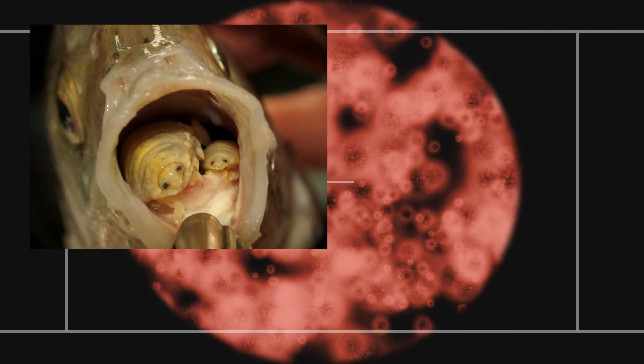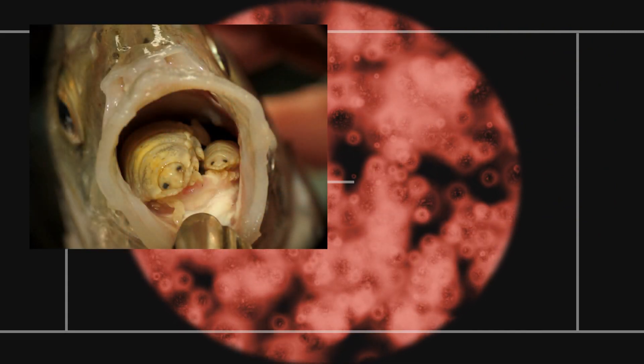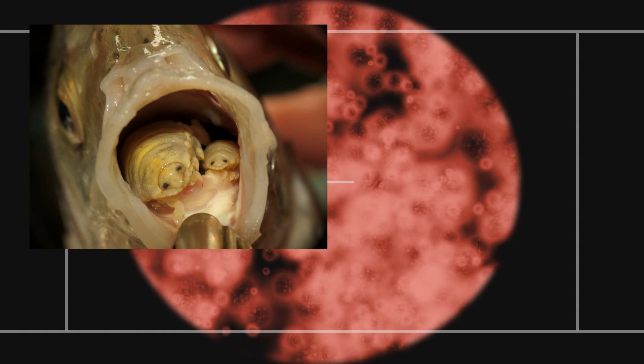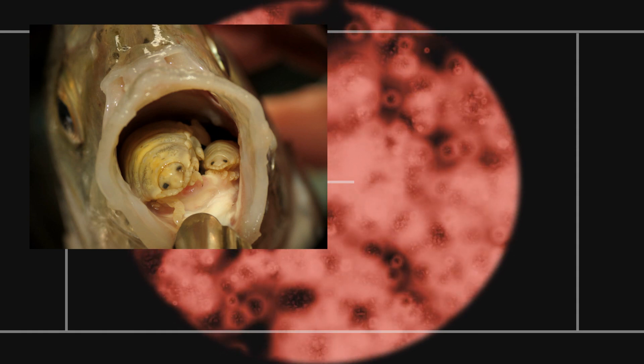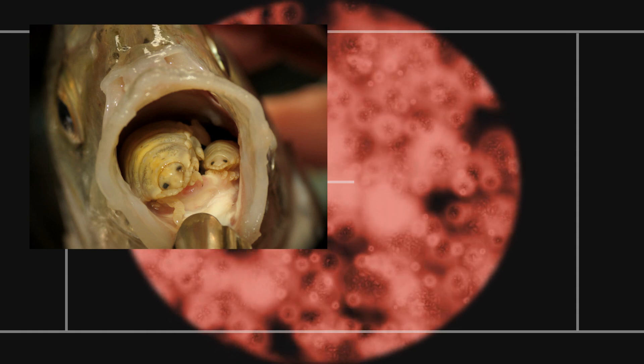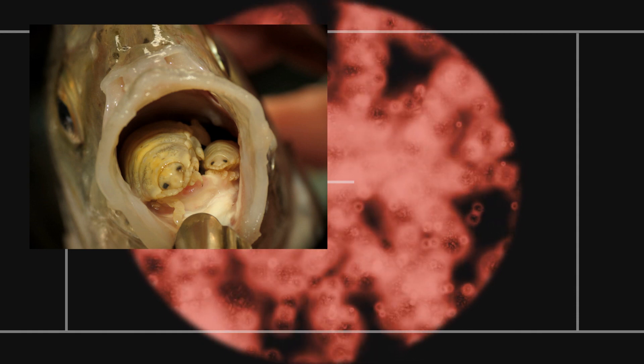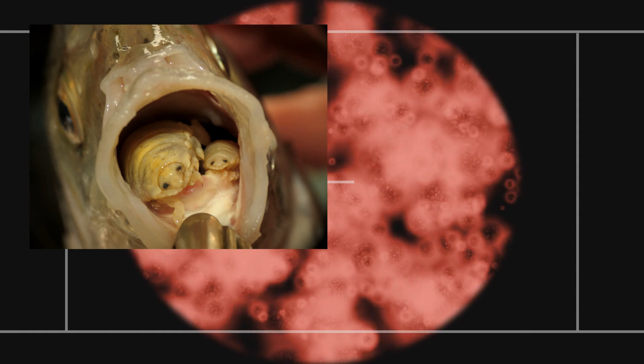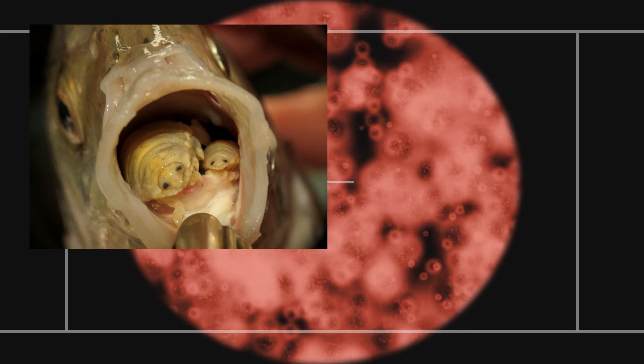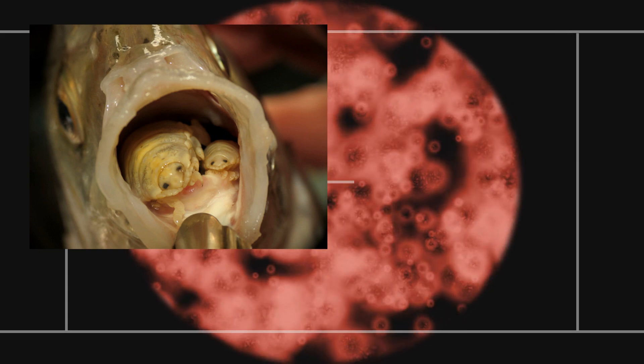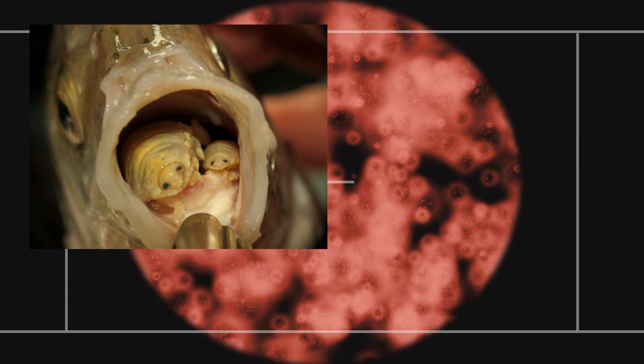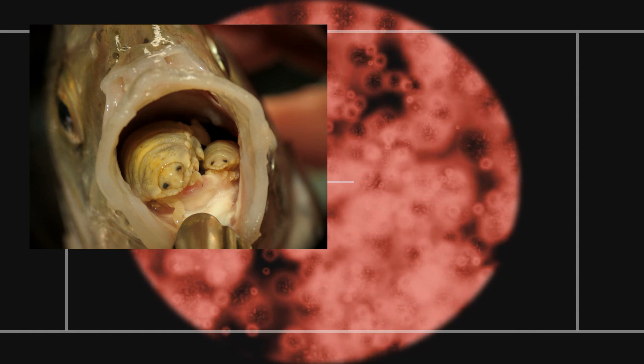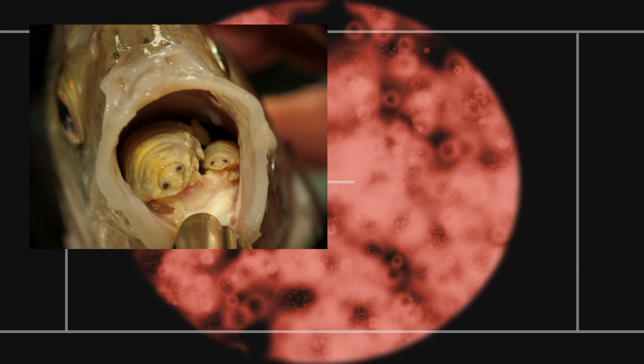Number 2, Cymothoa exigua. More commonly known as the tongue eating louse, this parasite does exactly as its name says. Thankfully, this parasite prefers fish to humans. It enters the fish through the gills and the females will attach themselves to the fish's tongue. It then proceeds to destroy it and become the new fish's tongue. This way, it can eat when the fish eats.